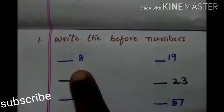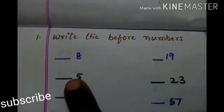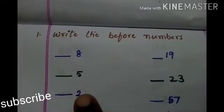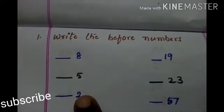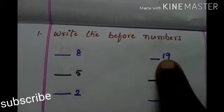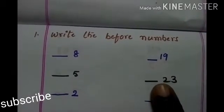Here we will see some exercises on before and after numbers. What comes before 8? It is 7. What comes before 5? What comes before 2? Before means above. Above numbers. Before 19. Before 23.